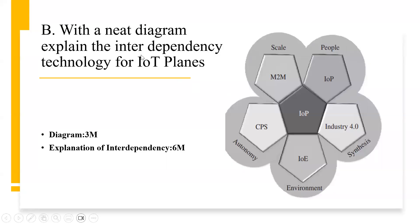With a neat diagram, explain the interdependency technology for IoT planes. This diagram consists of three marks. You will be explaining the interdependency between M2M, IOP, IOE, and CPS — how they have been scaled up across different technologies and how each technology is dependent on the others. When seeing the evolution of IoT from the 1990s up to machine learning, each technology was dependent on the other. That explanation carries six marks, making this question a total of 10 marks.